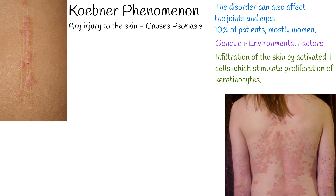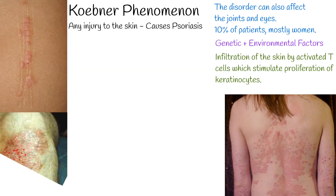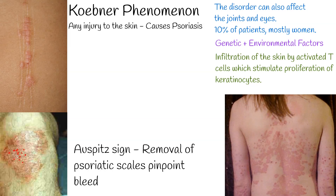Other associated features include epidermal hyperplasia and parakeratosis. Injury in the form of mechanical, chemical, and radiational trauma induces lesions of psoriasis. In addition, the epidermal cells fail to secrete lipids, which results in flaky and scaly skin typical of psoriasis. On successive removal of psoriatic scales, pinpoint bleeding points are seen, called the Auspitz sign, which is used to confirm the diagnosis clinically.